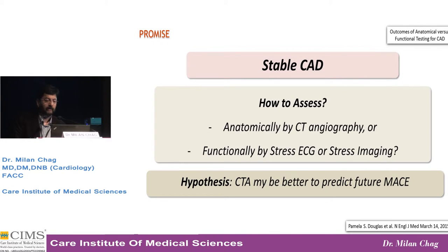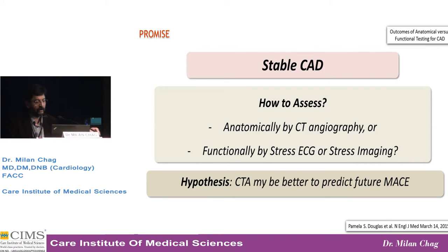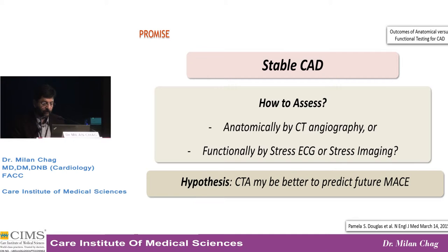Now, what about stable CAD? This is our day-to-day clinical practice. How to assess? Anatomically by CT angiography, or functionally by stress ECG (TMT), stress echocardiography, or stress nuclear scan. So what should be the first choice? The hypothesis is that CT angiography may be better to predict future major adverse cardiac events, and so it may be chosen as the first method of investigation.